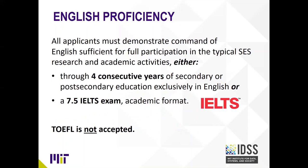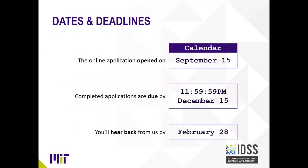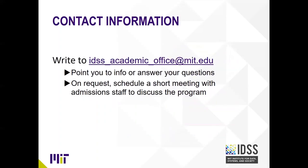Regarding English proficiency, we require either four consecutive years of secondary or post-secondary education in English, or a 7.5 on the IELTS academic exam. We don't accept the TOEFL. Regarding GRE scores—normally we require them, but for September 2021 we're not accepting them because the pandemic has disrupted access to the exam, and we want everyone to submit applications on a level playing field. The online application opened September 15th, and completed applications are due at 11:59 PM Eastern Standard Time on December 15th. We'll get back to you by the end of February with a substantial update on your application.